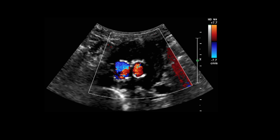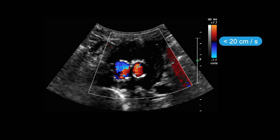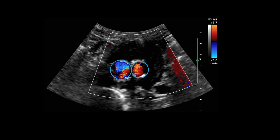Endoleaks are challenging to see on ultrasound. You're looking for color flow outside of the endografted limbs within the aneurysm sac, which should be thrombosed. When checking for endoleak, turn the machine's color scale down to less than 20 centimeters per second to increase sensitivity to pick up slow blood flow within the aneurysm sac. The scale in this image is set to 7.7 centimeters per second. In an ultrasound with no endoleaks, like in this example, you will only see color within the endografted limbs.